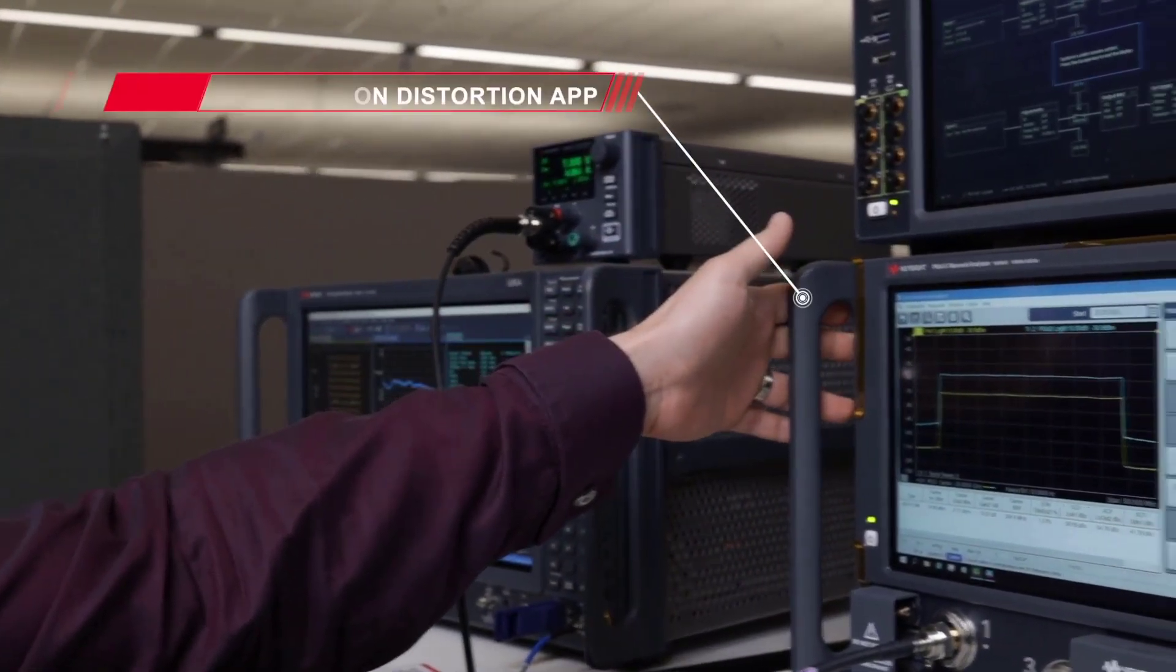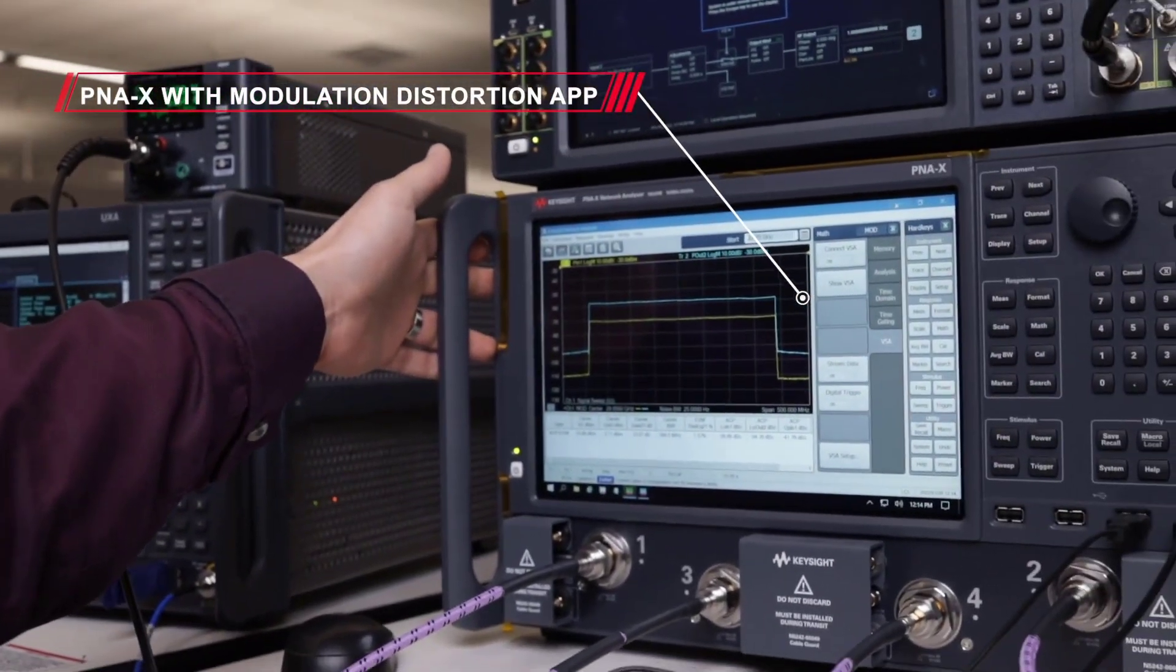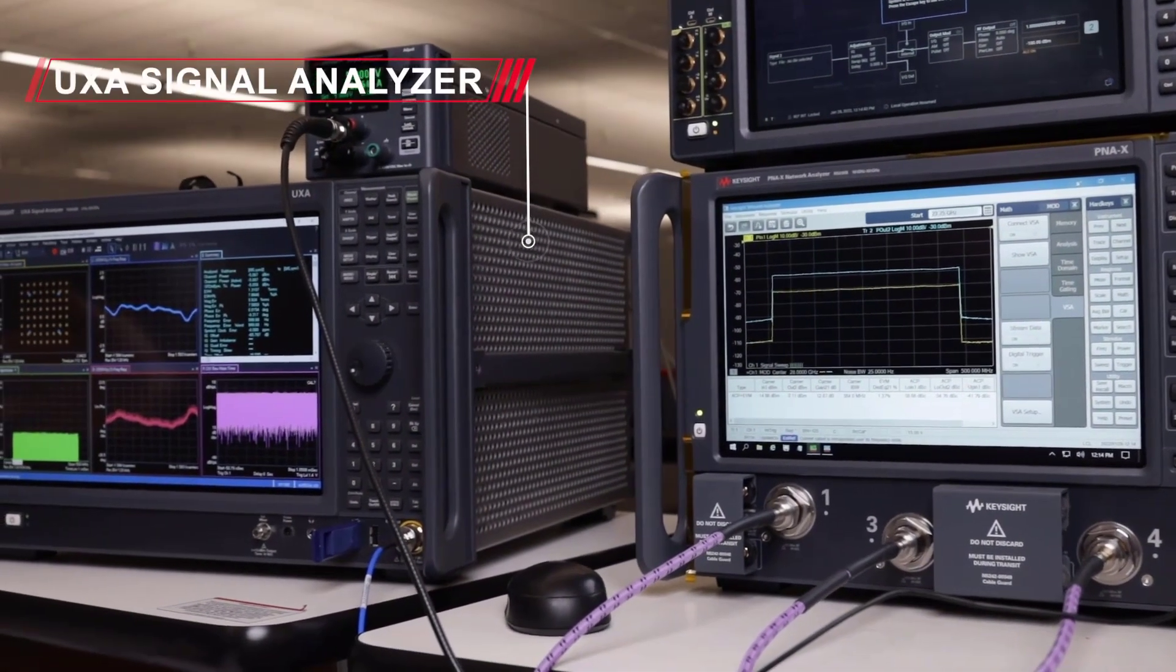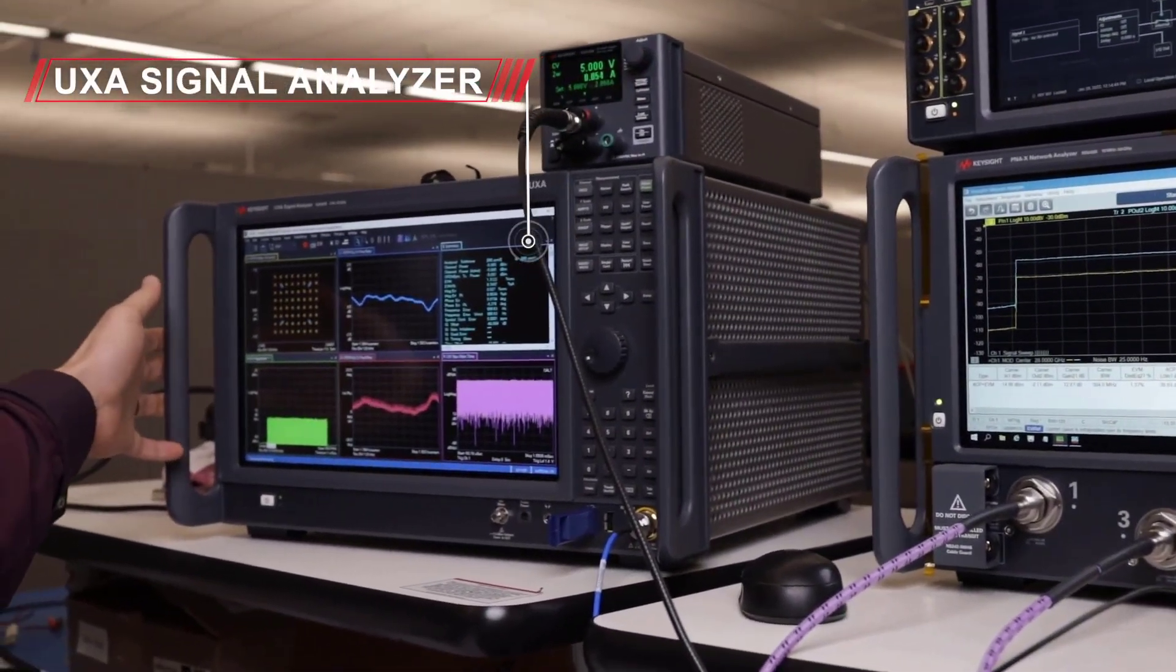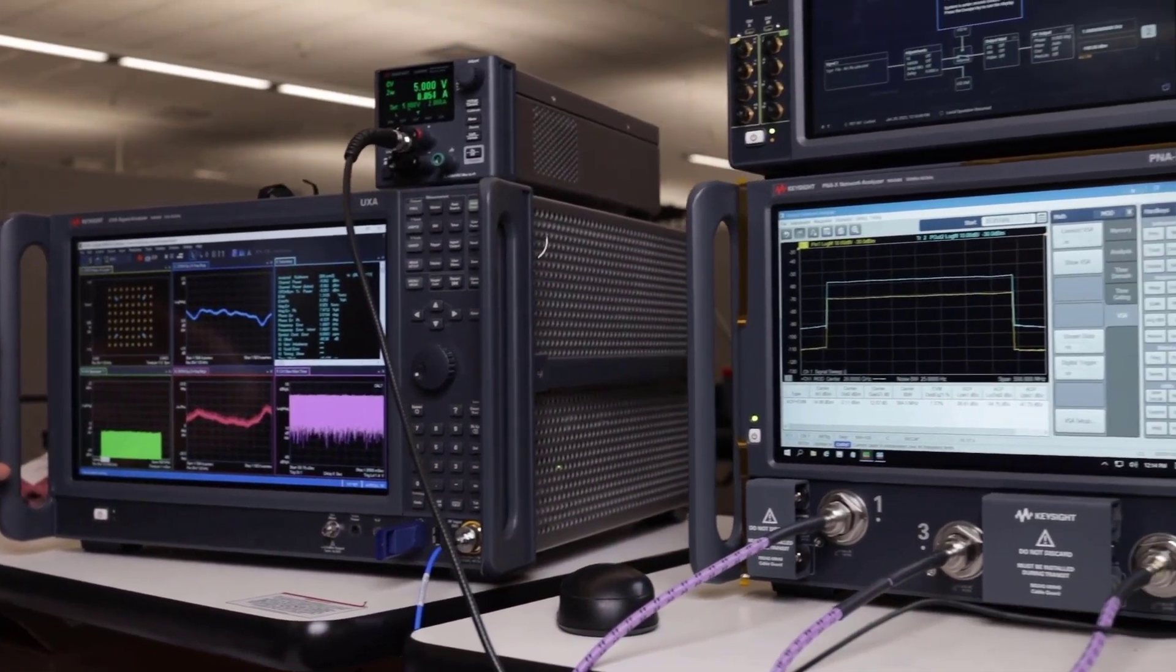We have the PNAX showing the modulation distortion application. We're going to be showing VSA on this shortly. And then we also have the UXA that's running VSA here. This is going to be used for correlation to show that we're getting similar results both on the UXA and the PNAX.